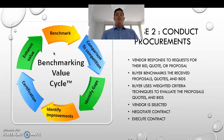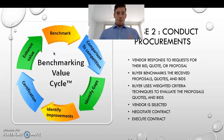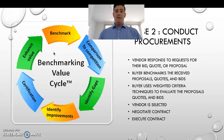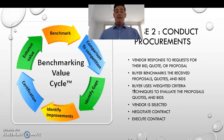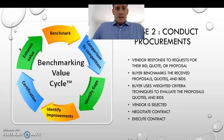The vendors will respond to the request for bids, request for quote, or proposal. The buyer will benchmark the received proposals, quotes, and bids. Benchmarking is a way to get an outside perspective on the quality or value of the work from someone other than a vendor. The buyer will use weighted criteria techniques to evaluate the proposals and bids - this is how you choose who you're going to select to do the work. Once you select a vendor, you negotiate the contract, then execute it and everyone signs.